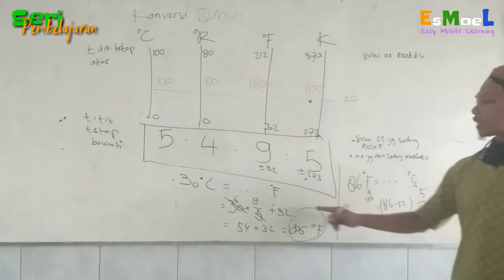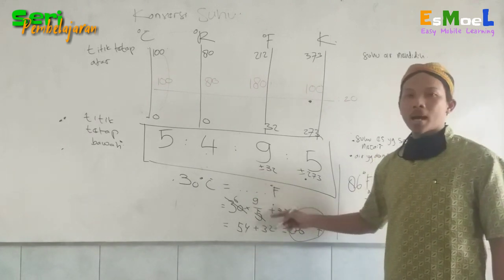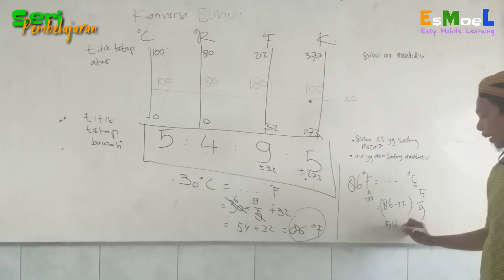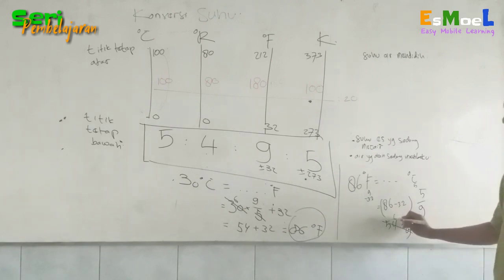Kalau ini dikurangkan dulu, 54. Dikalikan 5 per 9. Dicoret, jadi ketemu 6. 6 kali 5 ketemu 30 derajat Celsius.